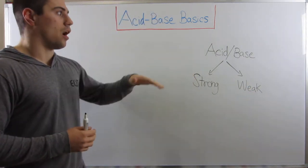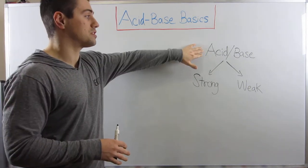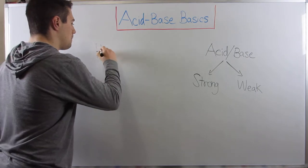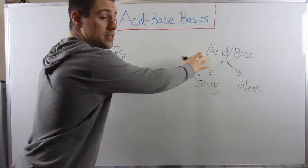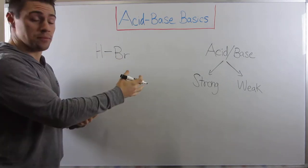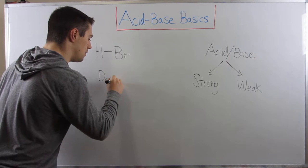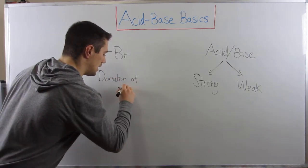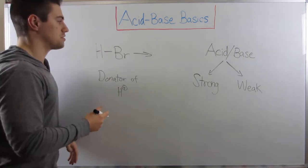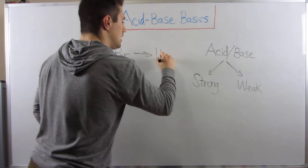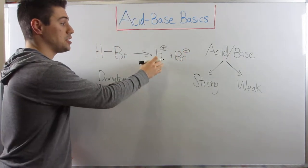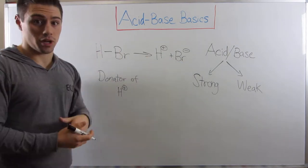A little throwback to Gen Chem. In organic chemistry, you will use the Bronsted-Lowry definition of an acid or a base. So let's use HBr to illustrate the definition of a Bronsted-Lowry acid. The definition of a Bronsted-Lowry acid is that it is a donator of H+. We need HBr to be a source of H+. When put in water, it will produce H+ and Br-. So yes, this is a good example of a Bronsted-Lowry acid.